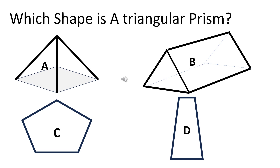Which shape is a triangular prism? The right answer is B.